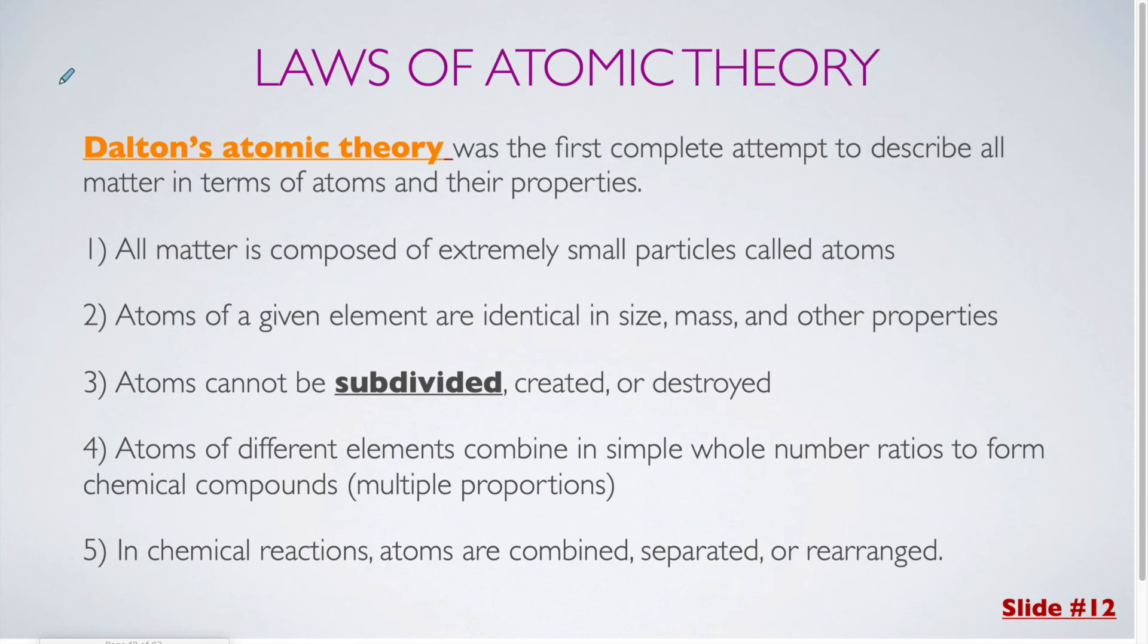Next we come to Dalton's atomic theory. Remember, Dalton was the person who came up with the last law that we looked at, the law of multiple proportions. So Dalton comes up with this summary of atomic theory that kind of combines everything that is known about atoms and elements up to that time. So it was the first complete attempt to describe all matter in terms of atoms and their properties.